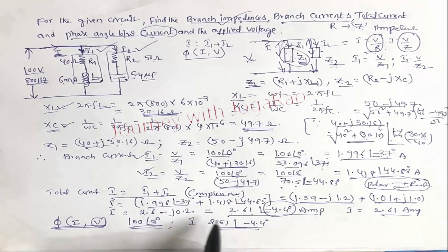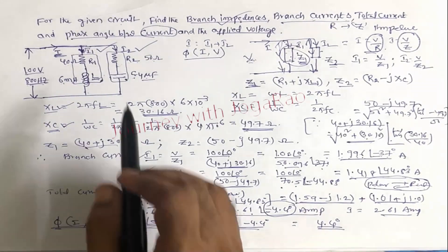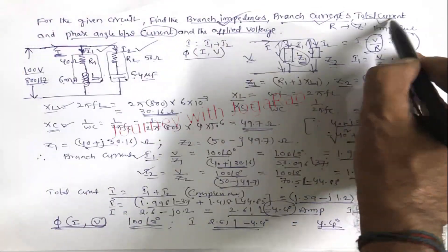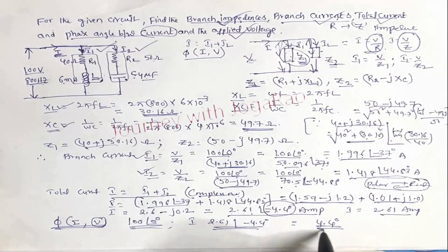Applied voltage is 100 at an angle 0 degrees and current is 2.61 at an angle minus 4.4 degrees. So this phase angle is 4.4 degrees. So the question asked branch impedance, branch current, total current, phase angle between current and applied voltage. We calculated all of this.